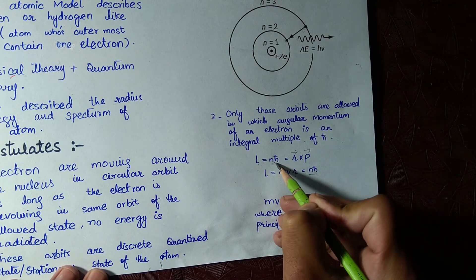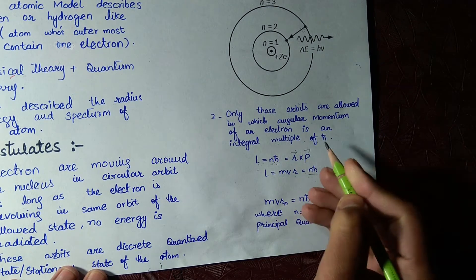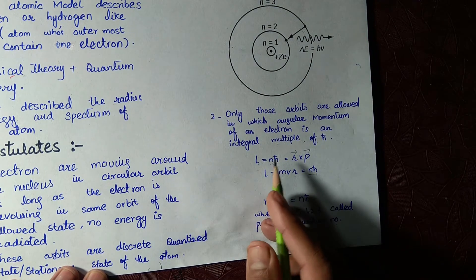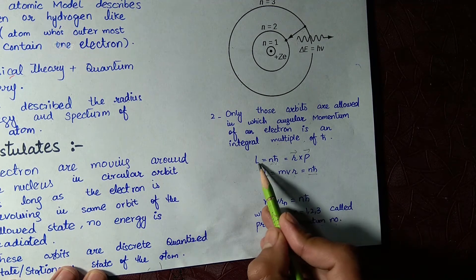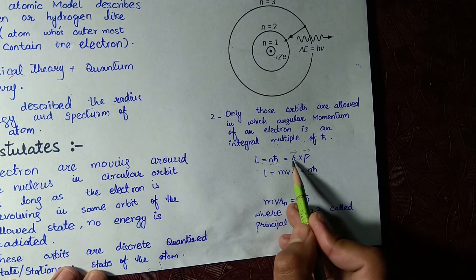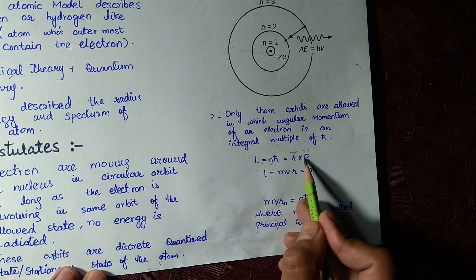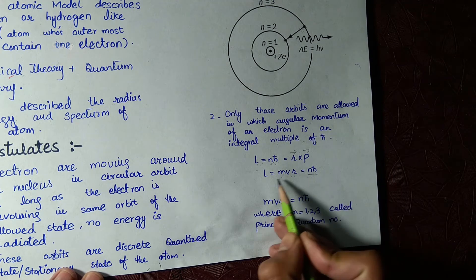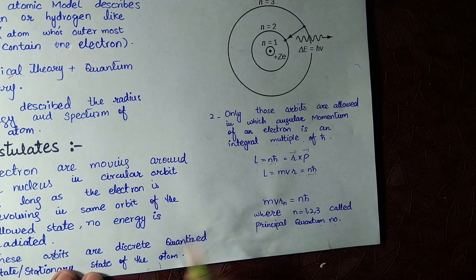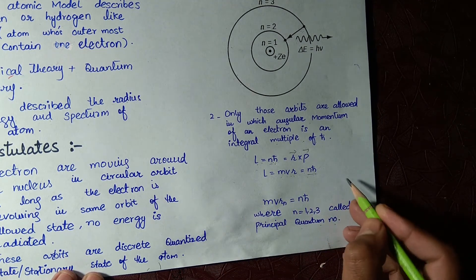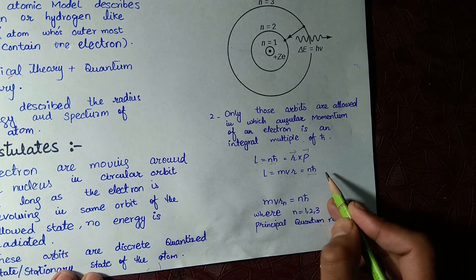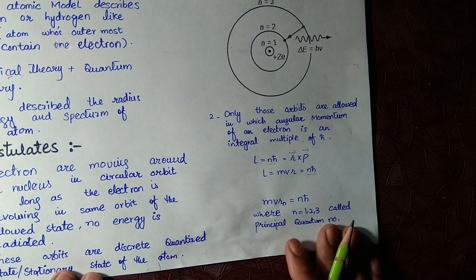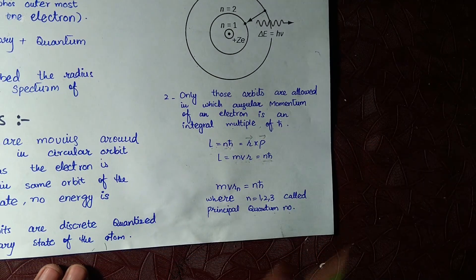We write L = nℏ, where n is the principal quantum number (1, 2, 3, 4, ...). Since angular momentum L = r × p = mvr, we get mvr = nℏ. This equation is very important and we will use it in the next lecture when we discuss the Bohr radius and the quantization of radius.